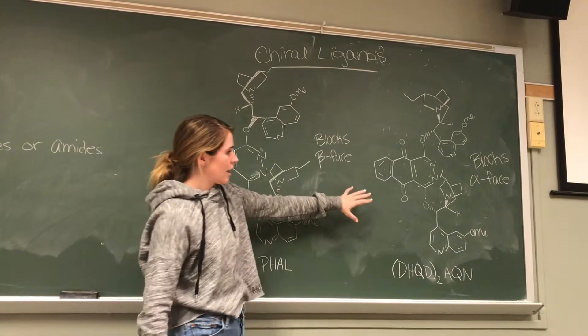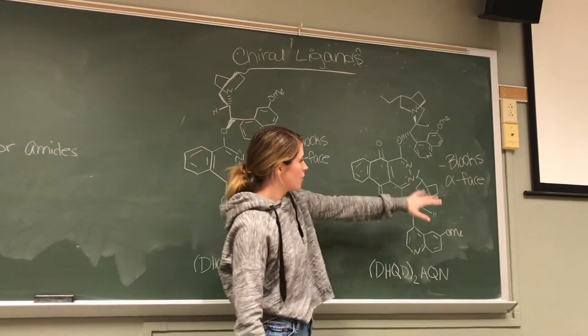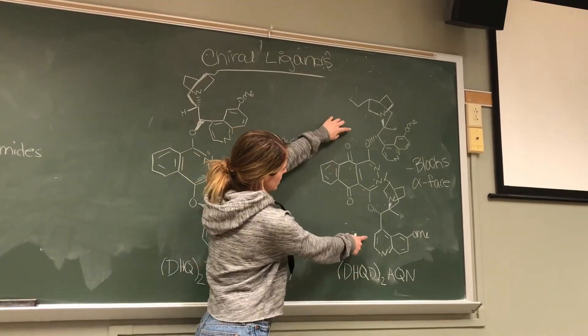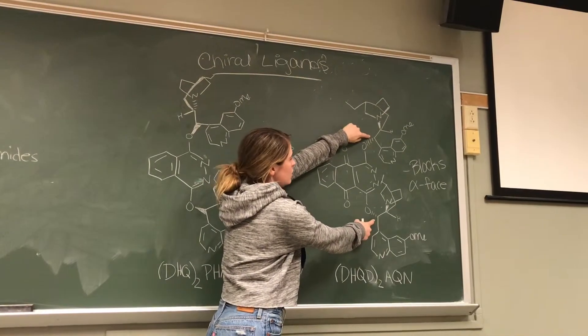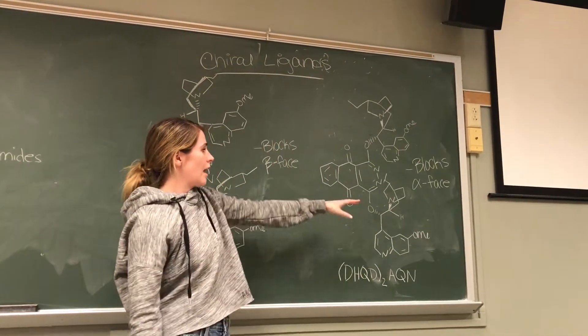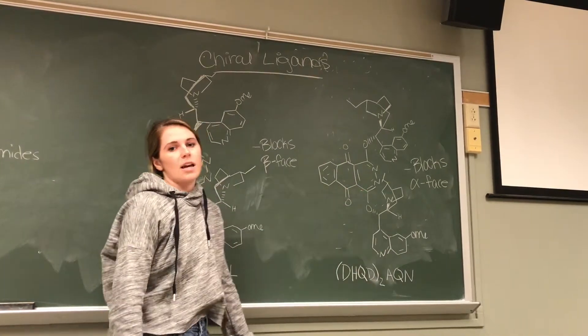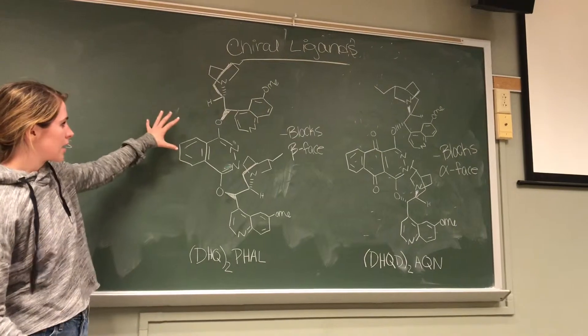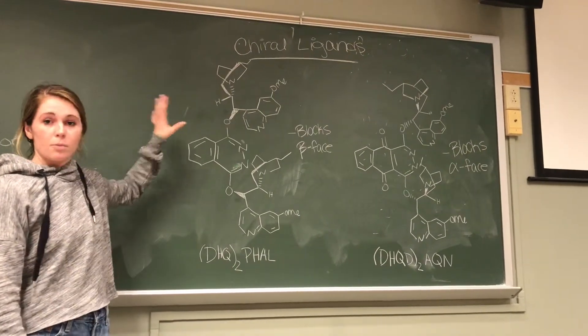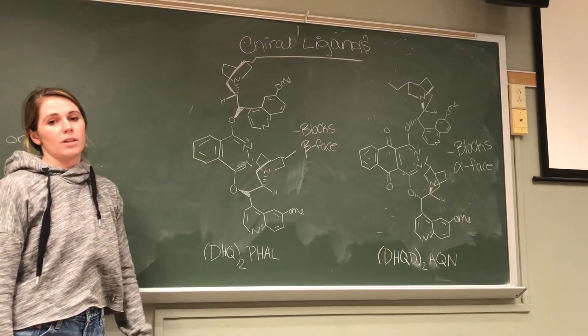Where in contrast to that, this is a chiral ligand that's used to block the alpha face, because these two large groups here are blocking the alpha enantiotopic face. So then it forces the new groups to then add on the beta face. So this is how the enantioselectivity is achieved through this reaction by these large chiral ligands that will either block either beta or alpha face, depending on what is desired.